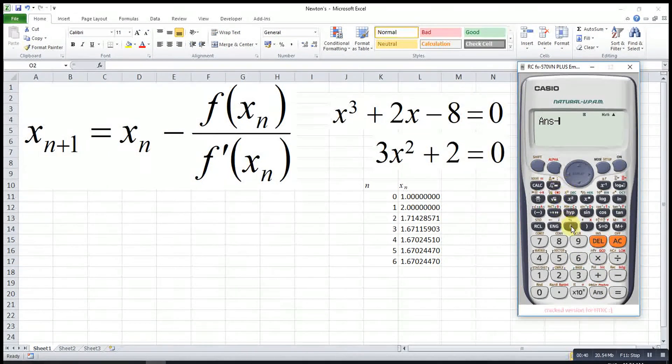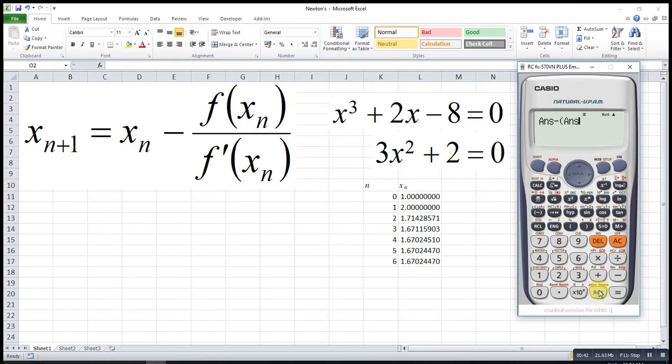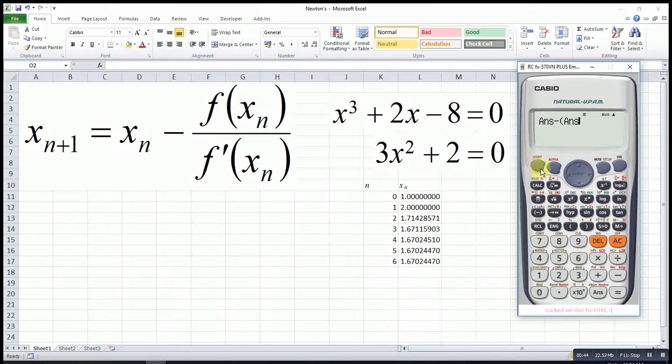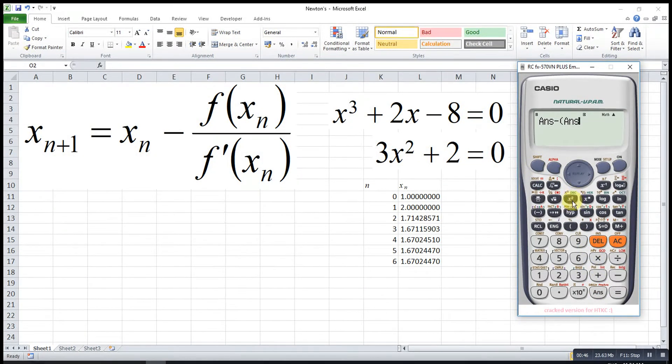So we press answer minus the function. The function will be bracket, answer to the power of 3, then plus 2 times ans minus 8, then bracket.